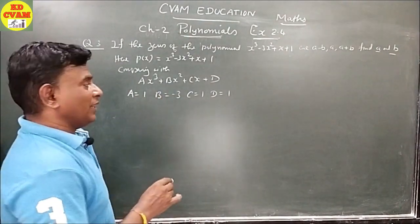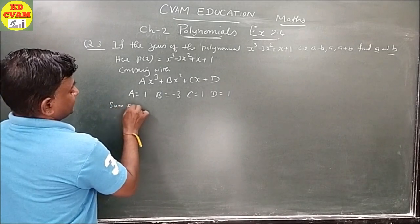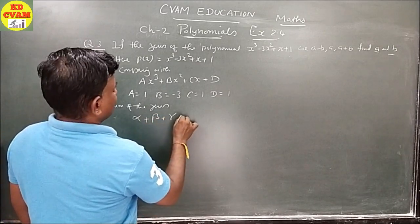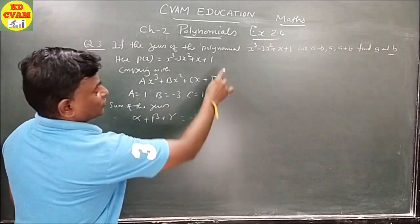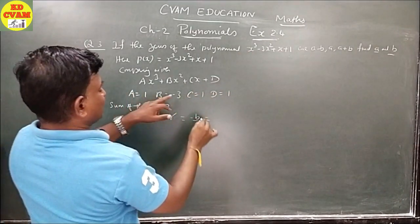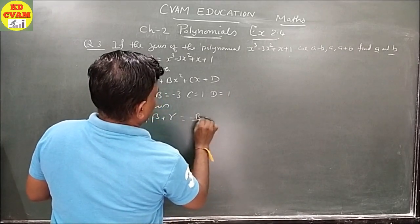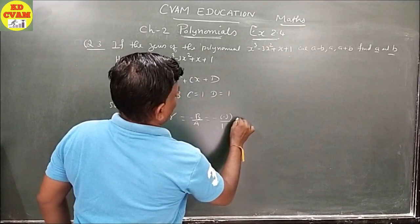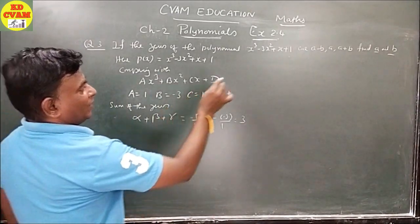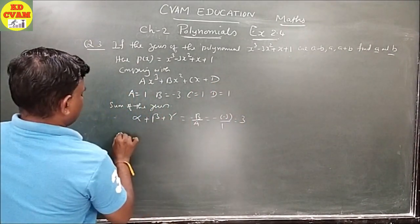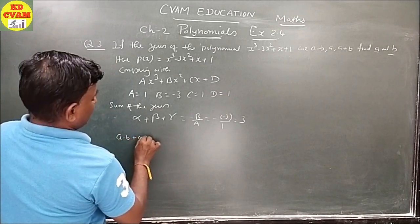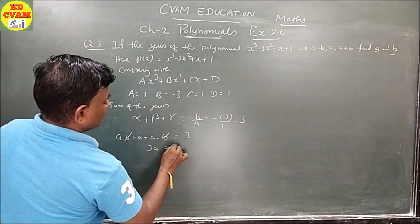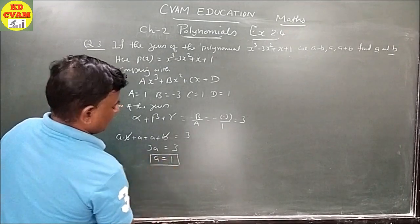Sum of zeros: alpha + beta + gamma = -B/A = -(-3)/1 = 3. With the given zeros: (a - b) + a + (a + b) = 3. The b terms cancel: 3a = 3, therefore a = 1.